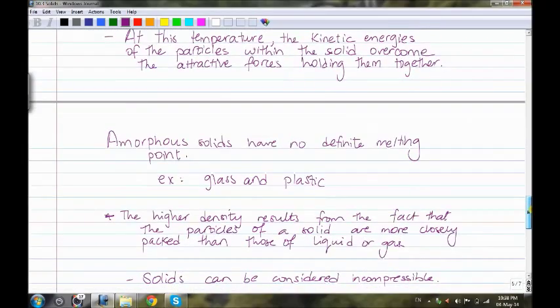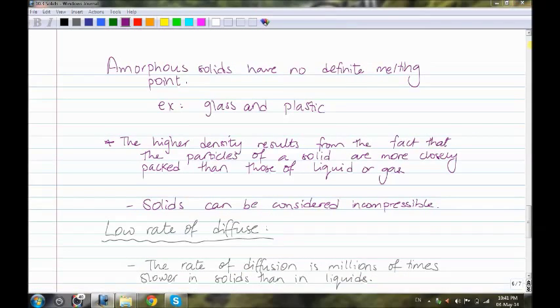Amorphous solids have no definite melting point, such as glass and plastic. The higher density results from the fact that the particles of a solid are more closely packed than those of a liquid or gas.